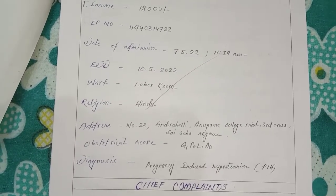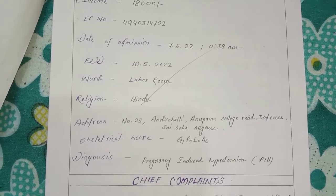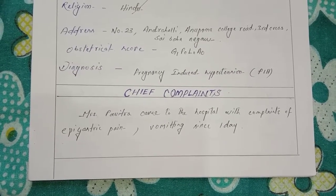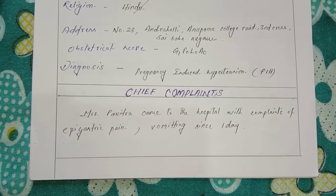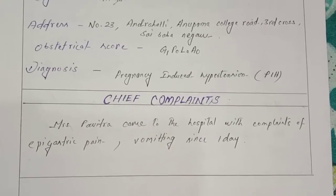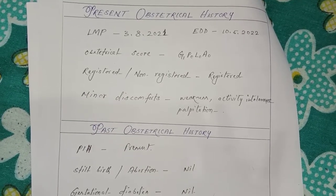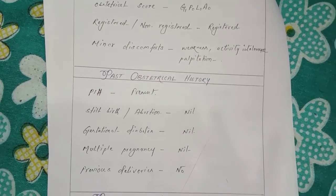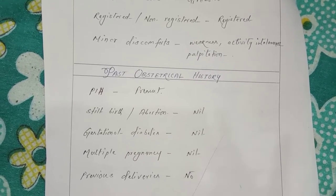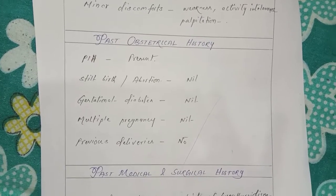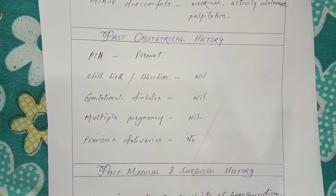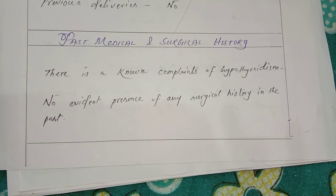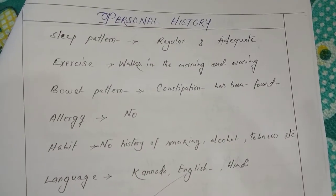Now chief complaints: Mrs. Babithra came to the hospital with complaints of epigastric pain and vomiting since one day. Present obstetrical history: LMP 3rd of some date 2021, EDD 10-5-2022, obstetrical score G1 P0 L0 A0, registered. Minor discomforts include weakness, activity intolerance, and palpitation. Then past obstetrical history and past medical and surgical history. Sleep pattern: regular and adequate.